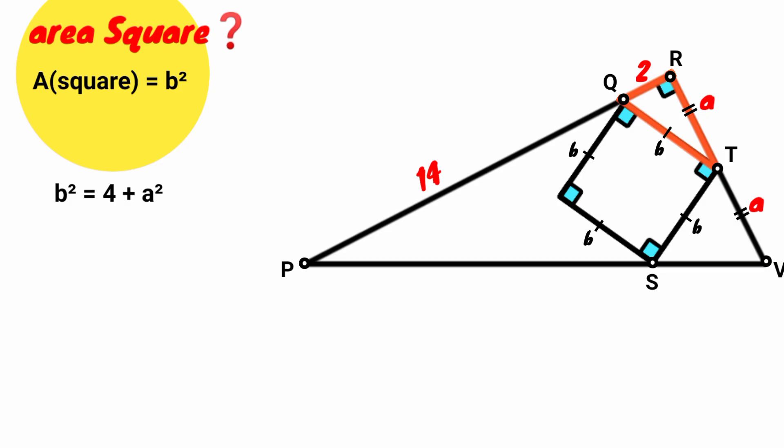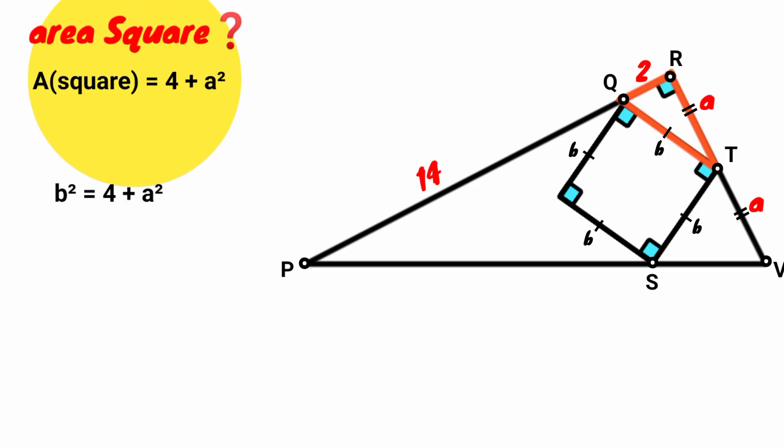Replacing B squared with 4 plus A squared, the area of the square equals 4 plus A squared.